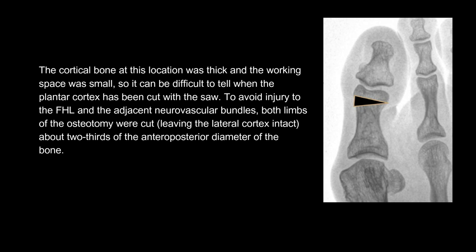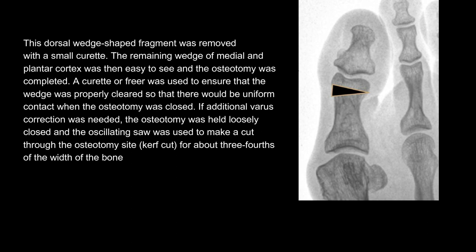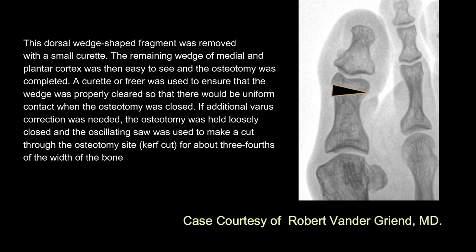To avoid injury to the FHL and the adjacent neurovascular bundles, both limbs of the osteotomy were cut leaving the lateral cortex intact, about two-thirds of the anteroposterior diameter of the bone. The dorsal wedge-shaped fragment was removed with a small curette. The remaining wedge of medial and plantar cortex was then easy to see and the osteotomy was completed. A curette or freer was used to ensure that the wedge was properly cleared for uniform contact when the osteotomy was closed. If additional varus correction was needed, the osteotomy was held loosely closed and the oscillating saw was used to make a cut through the osteotomy site for about three-fourths of the width of the bone.